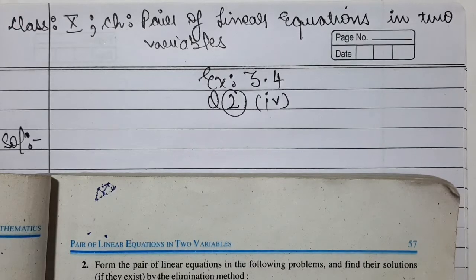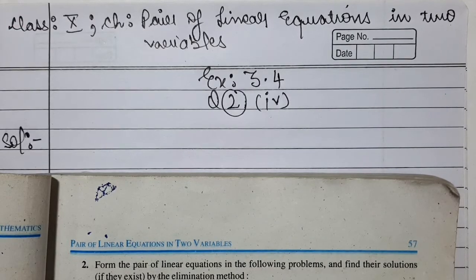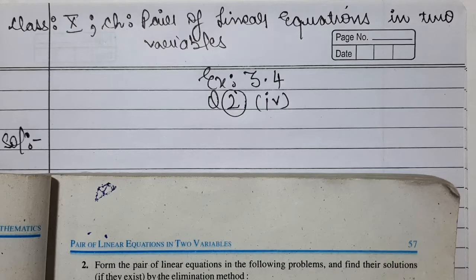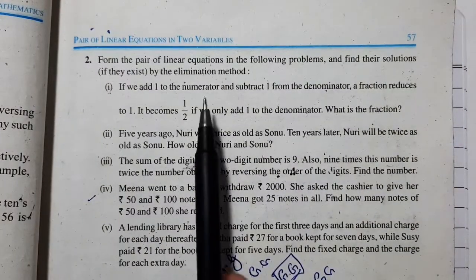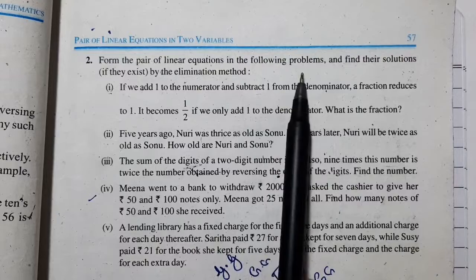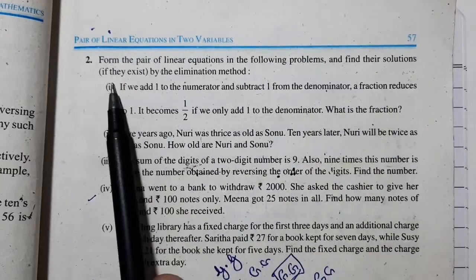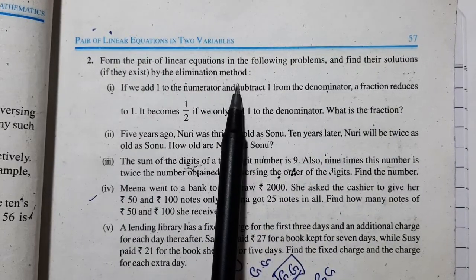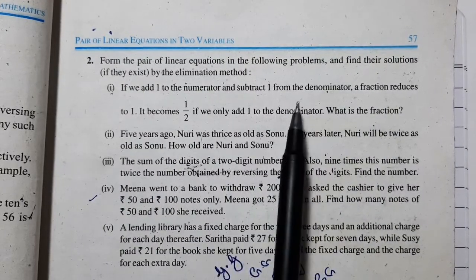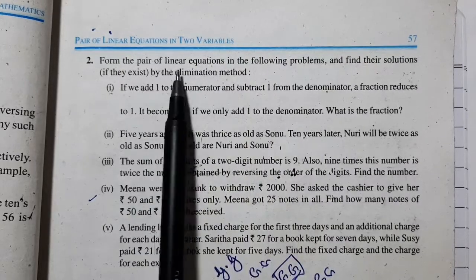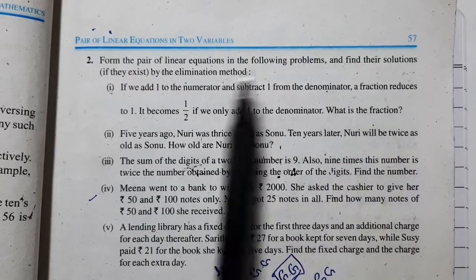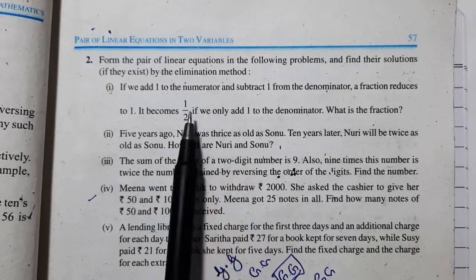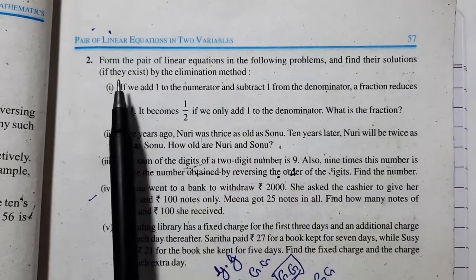Hello everyone, welcome to my YouTube channel Raminder Maths Hub. I am Raminder. Today we are doing exercise number 3.4, question 2 part 4. The question is to form the pair of linear equations in the following problems and find their solutions, if they exist, by the elimination method. We have some problems in which we have to make a pair of linear equations and then solve using the elimination method.